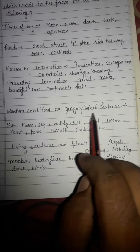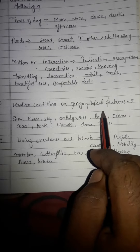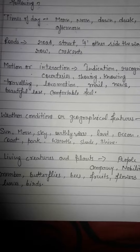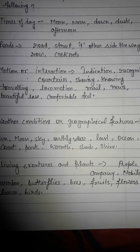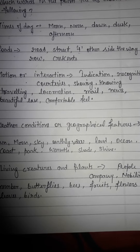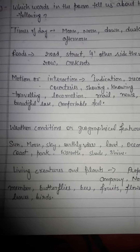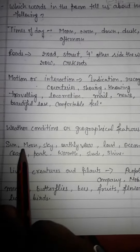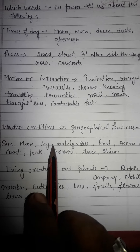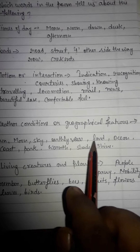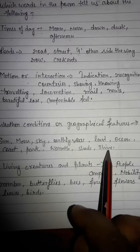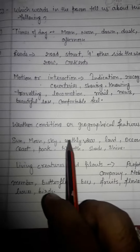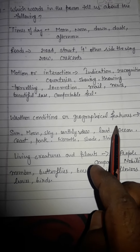Weather conditions or geographical features: this poem is based on the weather conditions in the month of November for the city of London. So here, Sunday, sun, moon, sky, earthly view, land, oceans, coast, park, warmth, shade, or sign — these are the weather conditions or geographical features.